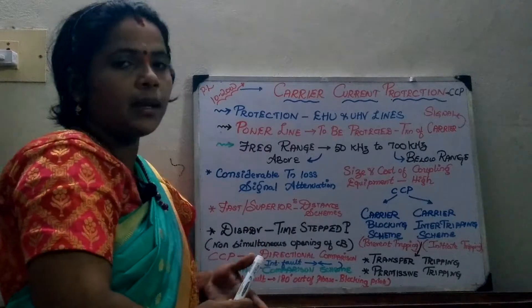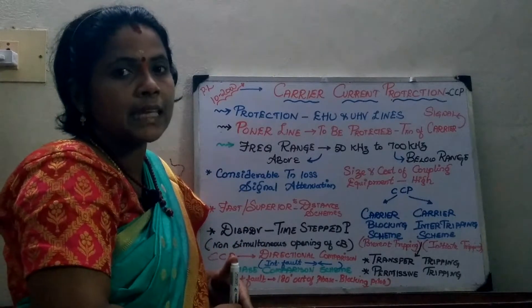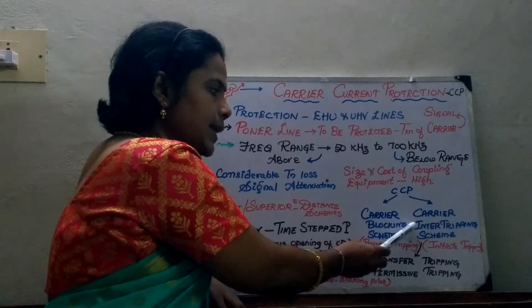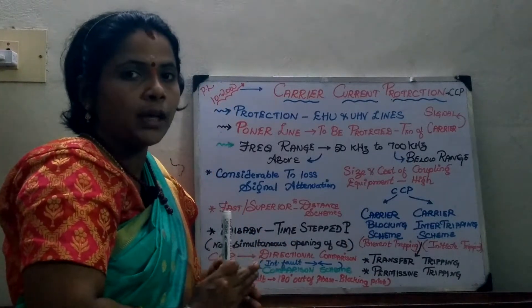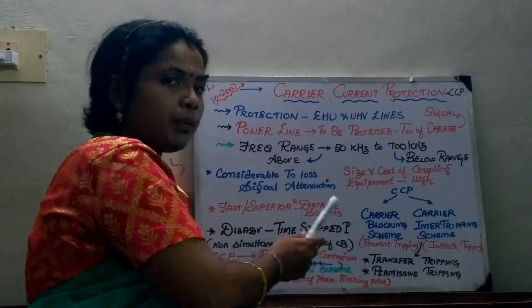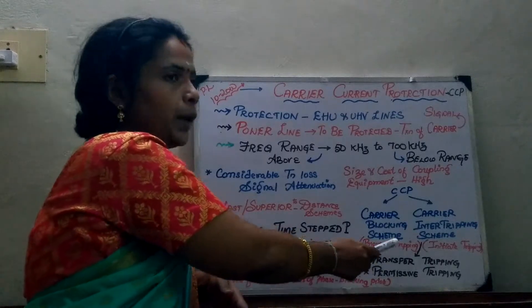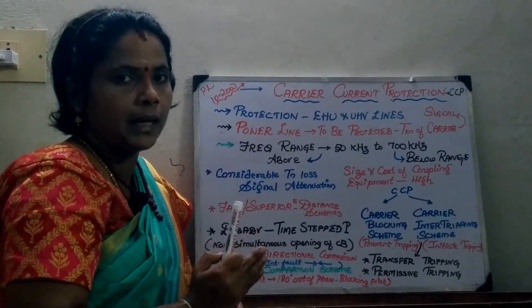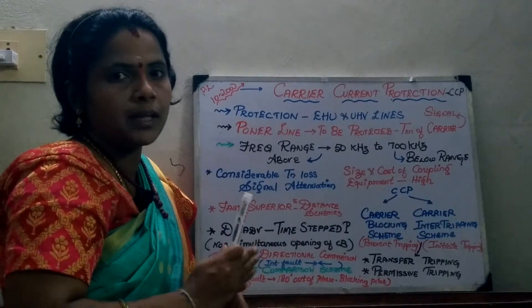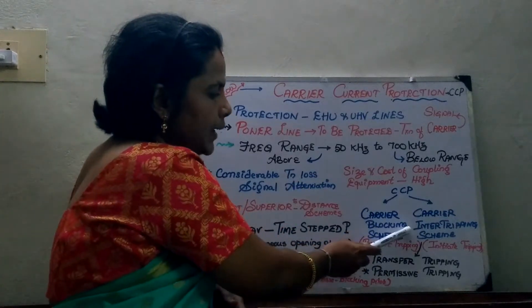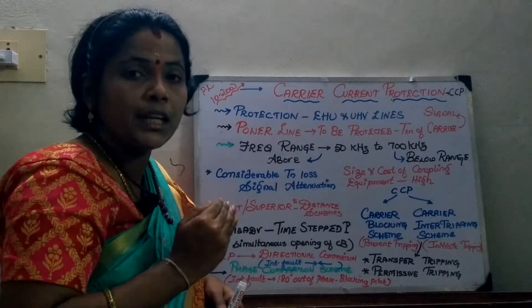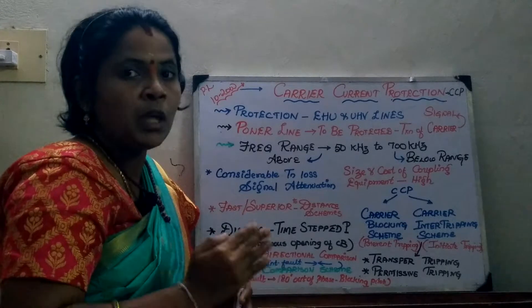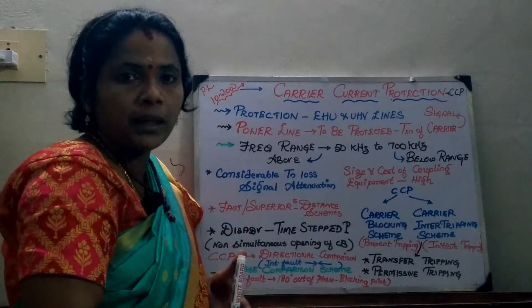Moving on to the carrier current protection scheme, there are two operating schemes. One is the carrier blocking scheme and the other is the carrier inter-tripping scheme. The carrier blocking scheme is where the carrier signal prevents the operation of the relay — it prevents the tripping. If the carrier signal is used for tripping the operation of the relay, that is called the carrier blocking scheme. Whereas the carrier inter-tripping scheme is used when we want to initiate the tripping and isolate a particular section in case of a fault.